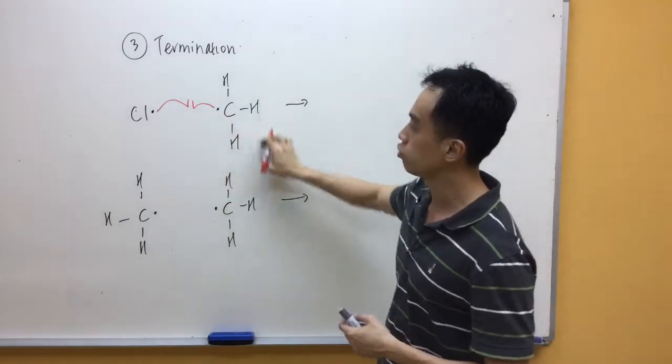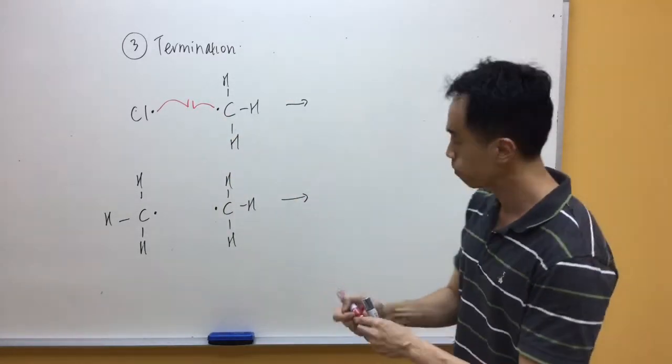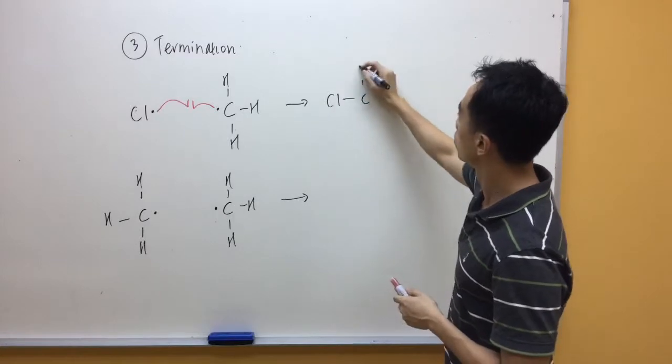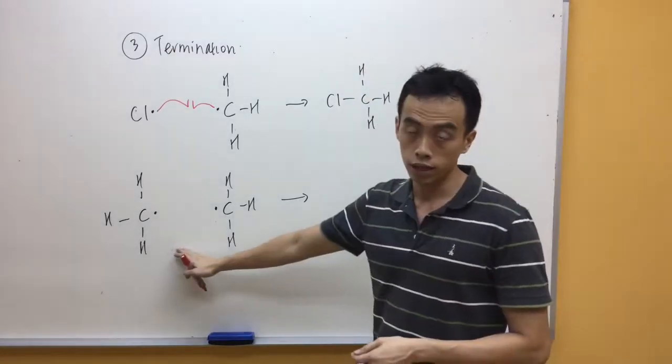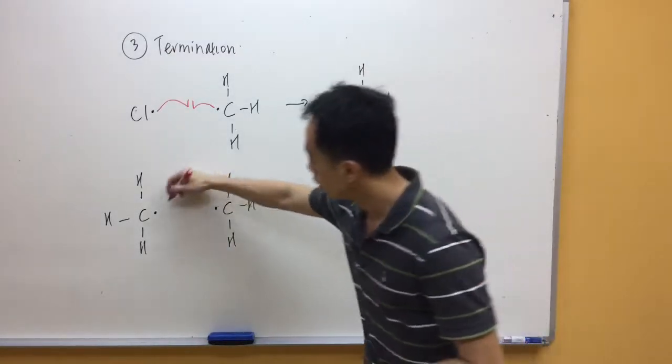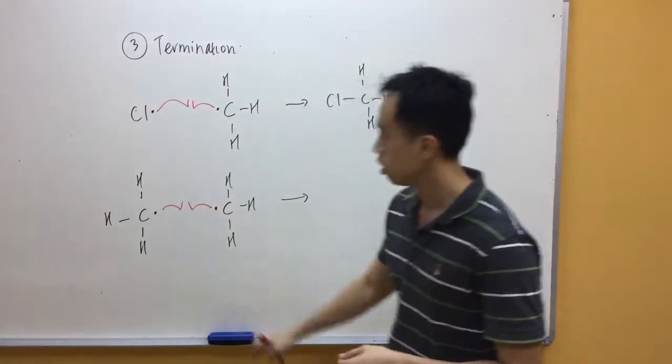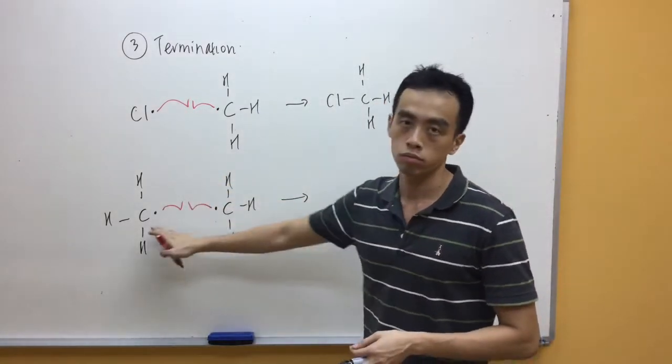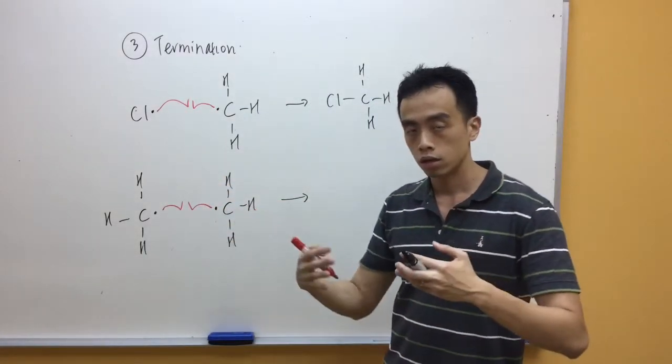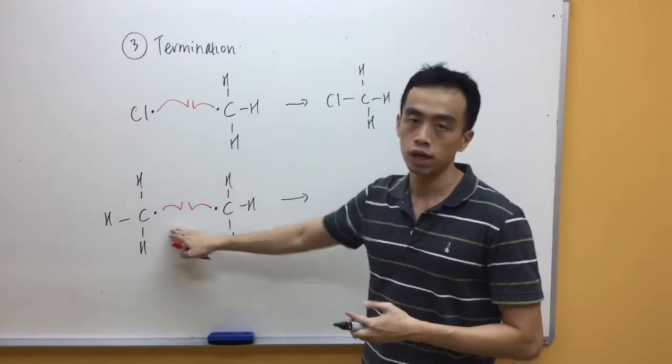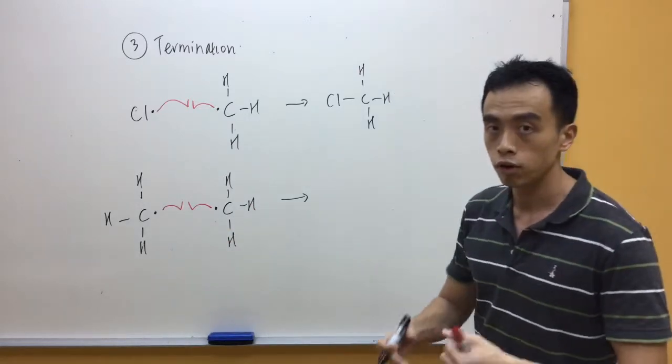So basically what they will do is they will just combine together to form a covalent bond between them. So this will just become CH3 bonded to a Cl. Now the second reaction will be the same. These two methyl radicals we just combine together to form a covalent bond between carbon and carbon. To form my ethane.